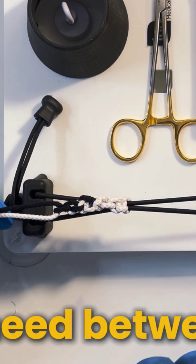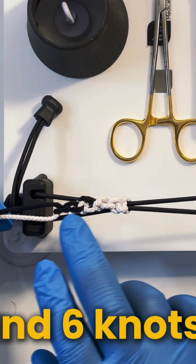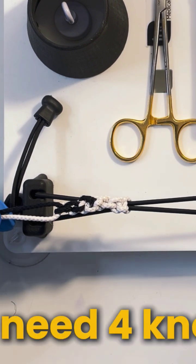For a monofilament suture you need between four and six knots. For a braided suture you need four knots.